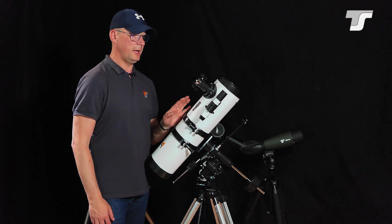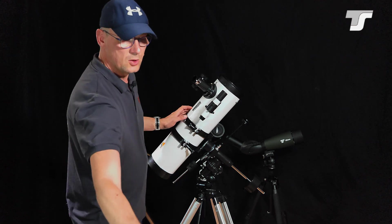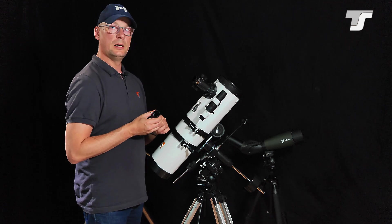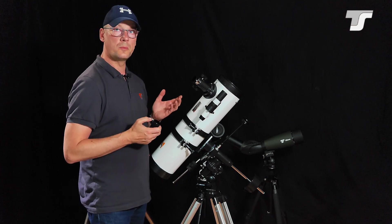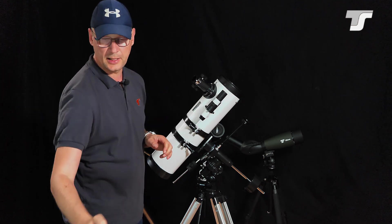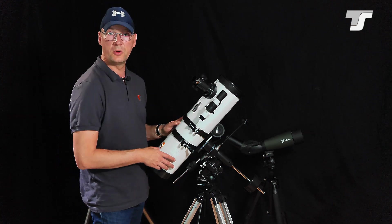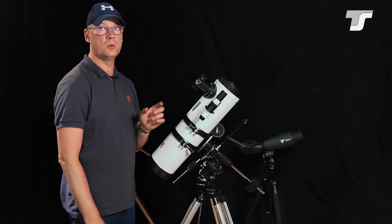You also get a Barlow lens with the telescope, a two-times Barlow lens. This gives you two more magnifications which are a bit higher: 52 times and 130 times, especially for very small objects like the moon.